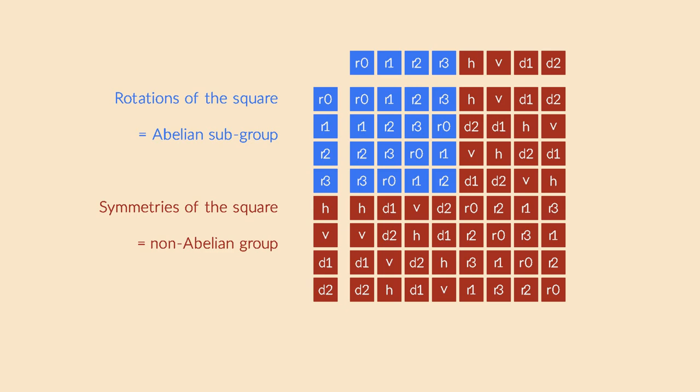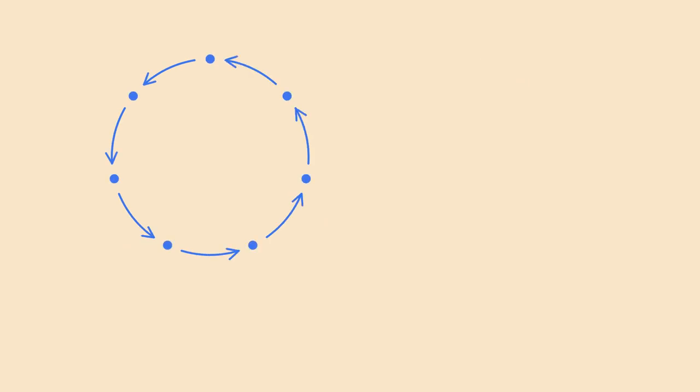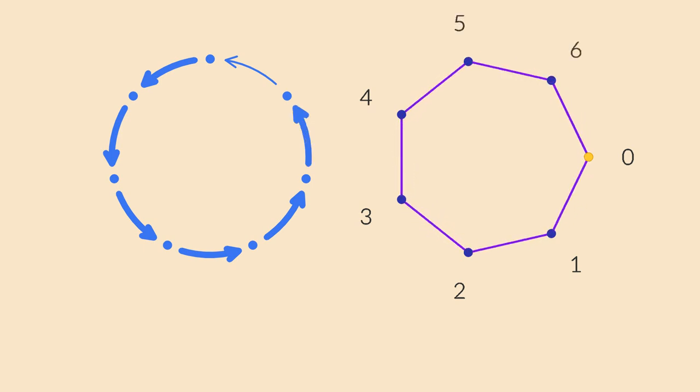We already talked about cyclic groups before. I mentioned that a cyclic group, by definition, can be generated from a single element. The rotations of a regular polygon are a great example. The only generator you need is the rotation by the smallest non-zero angle. You just repeat that rotation a number of times to reach all the other angles. And if you want to compose two rotations, you just add the angles.